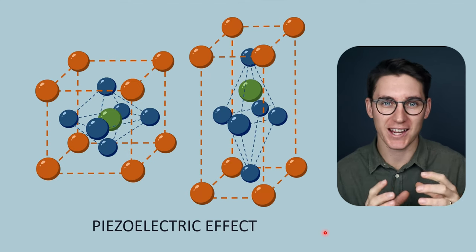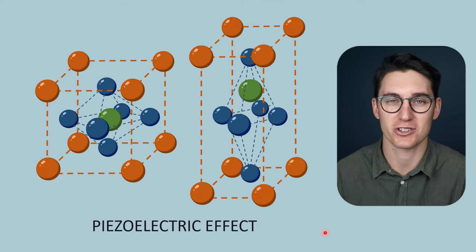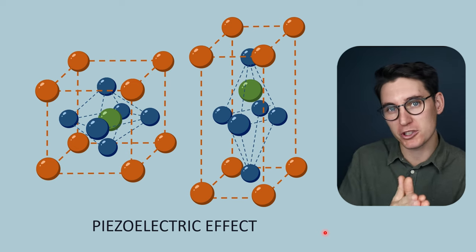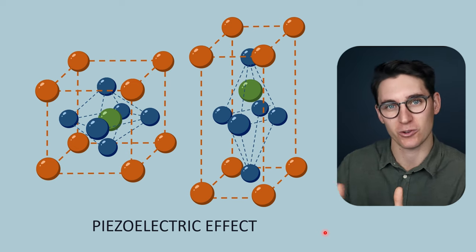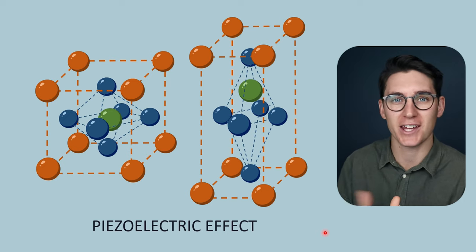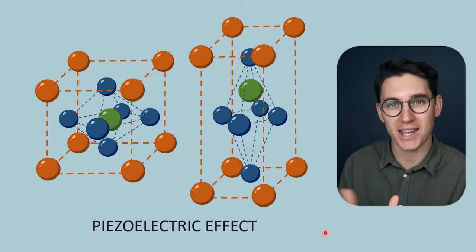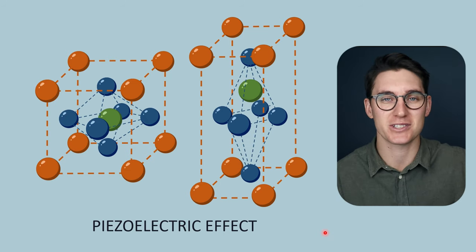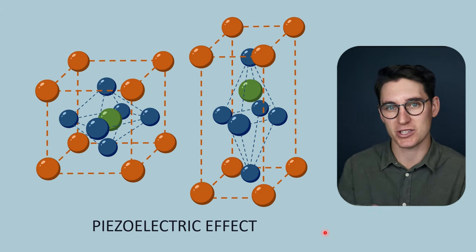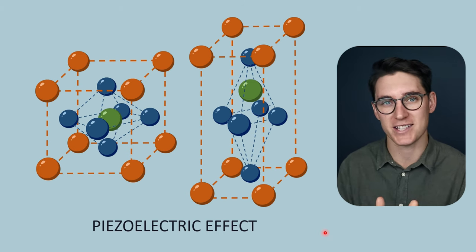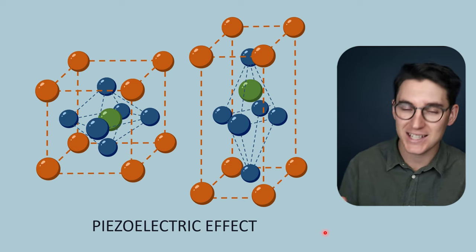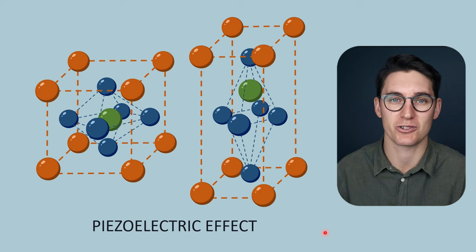We've spent the previous two talks looking at the components of the ultrasound transducer. We saw that the piezoelectric material was both responsible for generating ultrasound waves that propagate through tissues and receiving those returning echoes, converting that mechanical energy into an electrical signal that we can then use to create our ultrasound image. This was the result of the piezoelectric effect and the reverse piezoelectric effect, which allowed us to both receive and generate those ultrasound pulses.